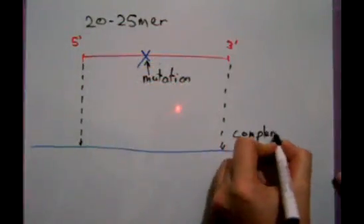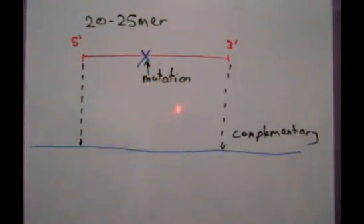The primer contains the desired mutation, which could be an insertion, deletion, point mutation, or multiple base changes. After the target DNA is denatured, the primer anneals to the target.